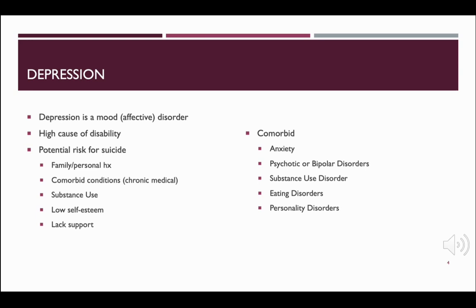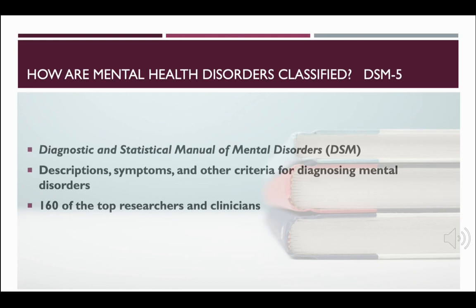They also may have comorbid medical conditions that influence the severity of their depression. The American Psychiatric Association, or APA, updated the Diagnostic and Statistical Manual of Mental Disorders, the DSM, to its fifth edition in 2013. The DSM-5 is the book that we use to help us classify mental health disorders. The APA had a task force of about 160 researchers and clinicians that updated, revised, or removed some of the information in the DSM-4. This book has description, symptoms, and other criteria for diagnosing mental disorders, and it's revised to ensure the most up-to-date research and scientific findings are included.